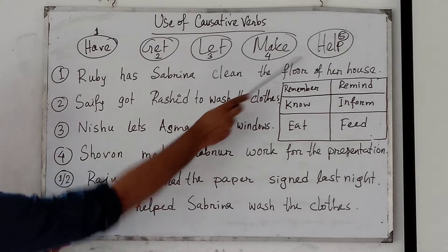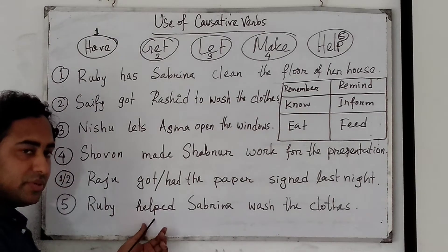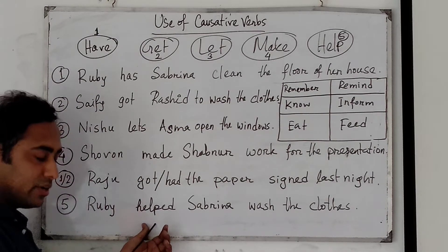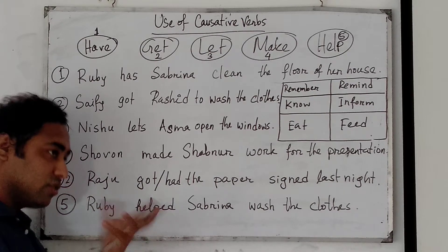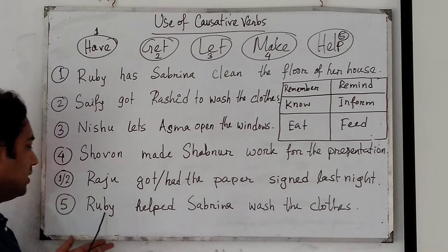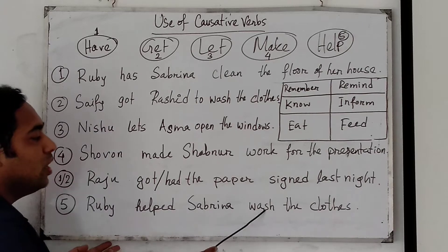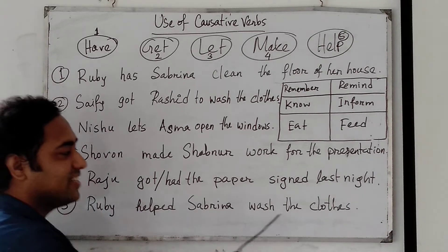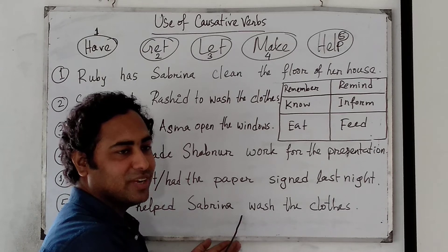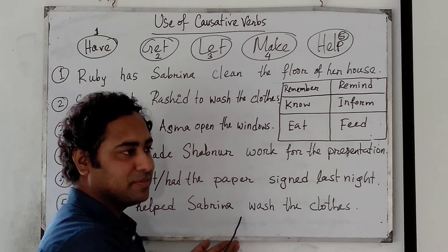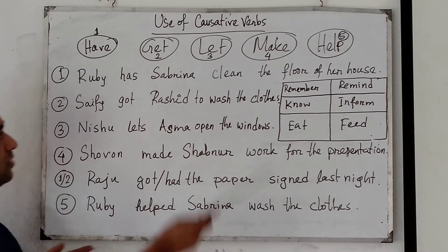Coming to number five: help. Help is not a causative verb according to many grammar books, but it can be used as a causative verb. 'Ruby helped Sabrina watch...' — no 'to' plus verb, only the base form of the verb.